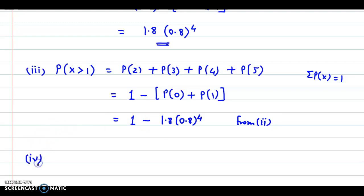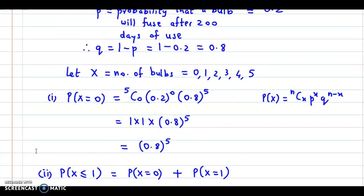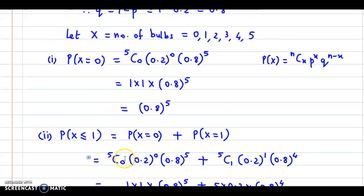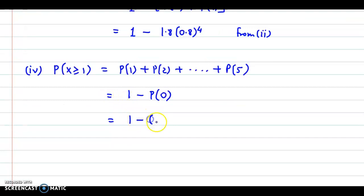Fourth case: probability of X greater than or equal to 1. This means it can be 1, 2, 3, up to 5. Using the same property that the summation of all probabilities is 1, instead of calculating 1, 2, 3, 4, 5, we subtract the remaining probability from 1. We subtract P(0). P(0) we calculated in the first case: 0.8 raised to 5. So this is 1 minus 0.8 raised to 5. This references the first case. This is how you calculate the given probabilities.